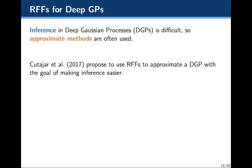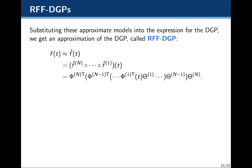Inference in a Gaussian process can be very expensive computationally, and you can imagine that inference in deep Gaussian processes can also be very expensive and difficult. So generally, people turn to approximate methods to do inference in deep Gaussian processes. Kudjaar et al. proposed to use random Fourier features to approximate a deep GP with the goal of making inference easier. A deep Gaussian process is just a composition of many Gaussian processes one after another, and we can replace each with an RFF deep Gaussian process approximation.